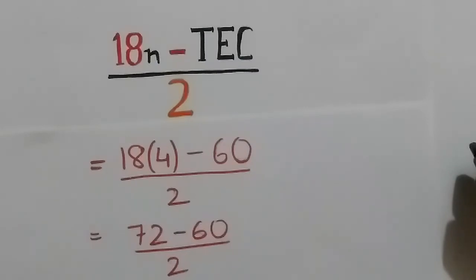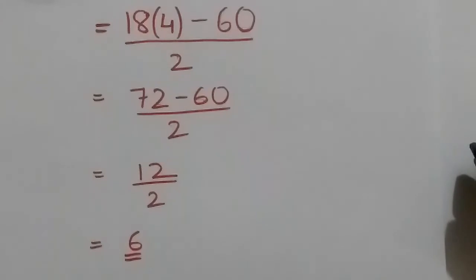Substitute the value of the number of metal, N, and the total electron count. The metal-metal bond order we get is 6.